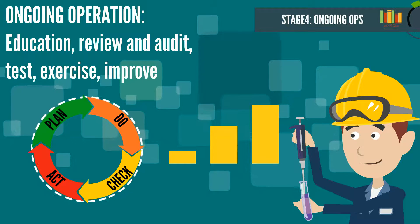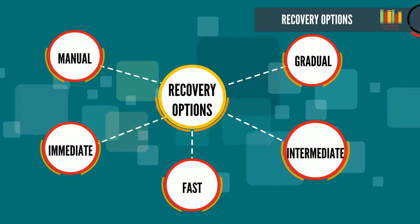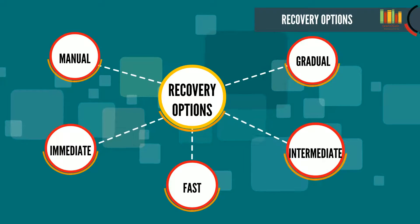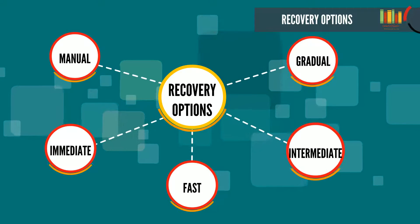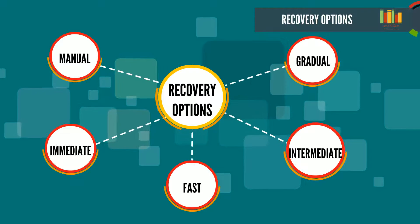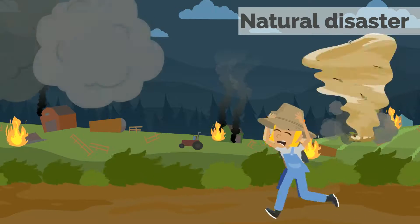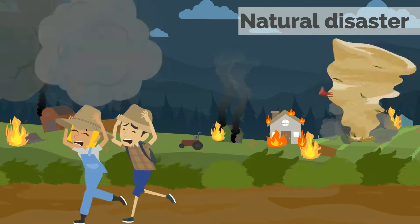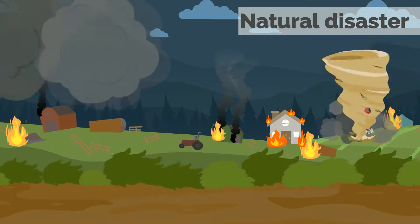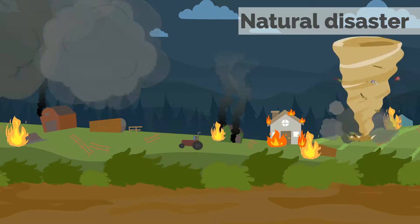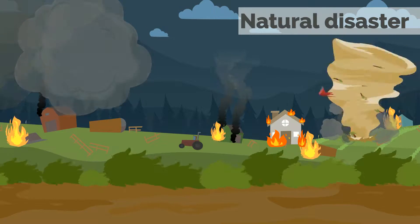The various recovery options in IT SCM are manual, immediate, fast, intermediate, and gradual. We will look at these in detail in a separate video. IT Service Continuity Management should be driven by business risk, which is identified by business continuity planning, and ensure that the recovery arrangements are aligned to the identified business impacts, risks and needs.